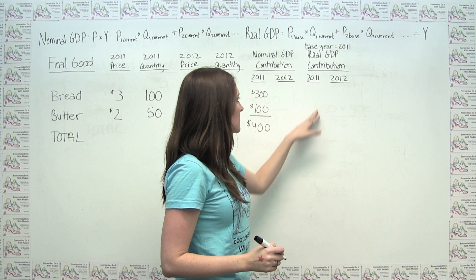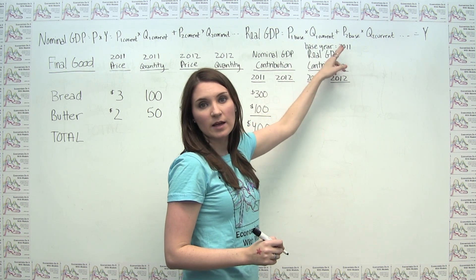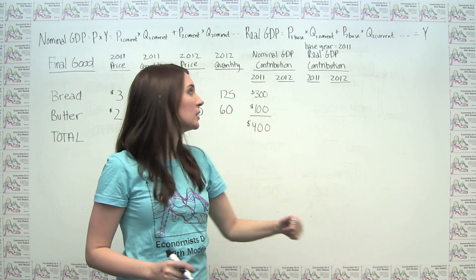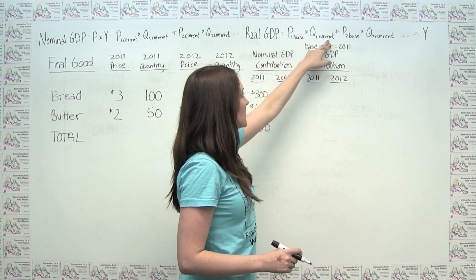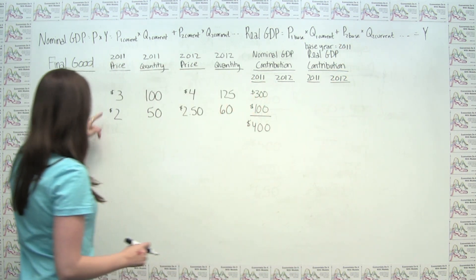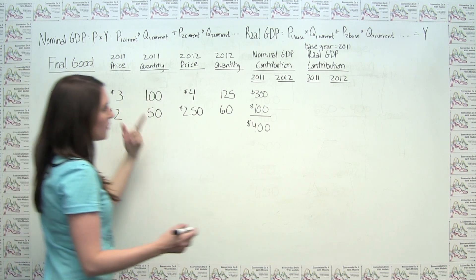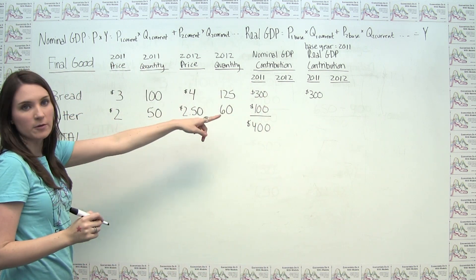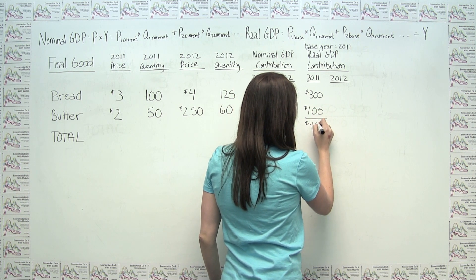If we wanted to calculate 2011 real GDP, because we've decided that our base year is 2011 — which is somewhat of an arbitrary choice; you'd have to be told what the base year is — real GDP is just the price in the base year times the current quantity, for each item. Since the base year is 2011, it's still going to be the base year price times the 2011 quantity, which not surprisingly gives us the same values as nominal GDP: $300, $100, and $400.